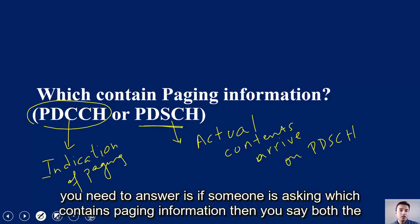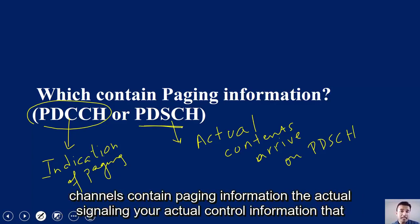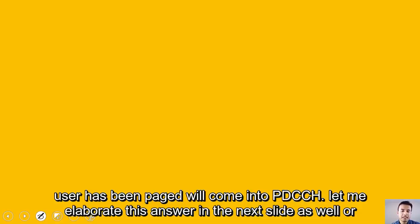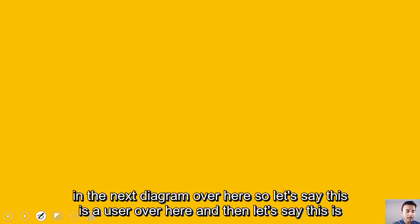To answer this question, if someone is asking which contains paging information, you say both these channels contain paging information. The actual signaling or control information that user has been paged will come into PDCCH. Let me elaborate this answer in the next diagram.